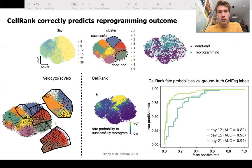However, if you use CellRank to compute fate probabilities, you find the successful state and the fate probabilities towards the state correlate very well with ground truth.